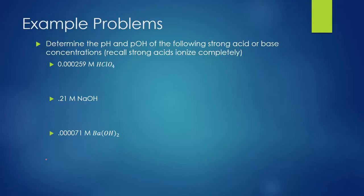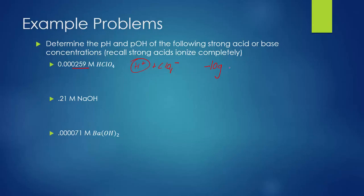Let's work some example problems with strong acids and bases. Strong means they ionize completely. For 0.000259 M perchloric acid (HClO4), it ionizes into H+ and ClO4-, producing 0.000259 M hydronium. Taking the negative log of 0.000259 on the calculator gives pH equals 3.587.